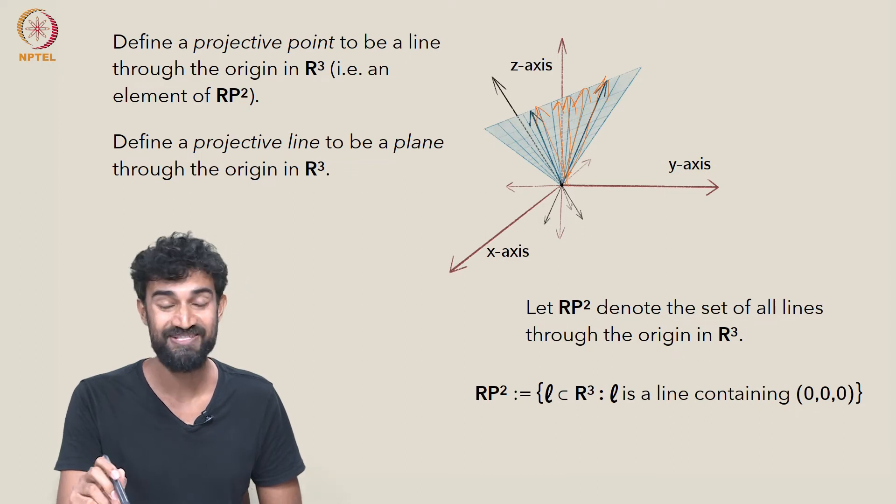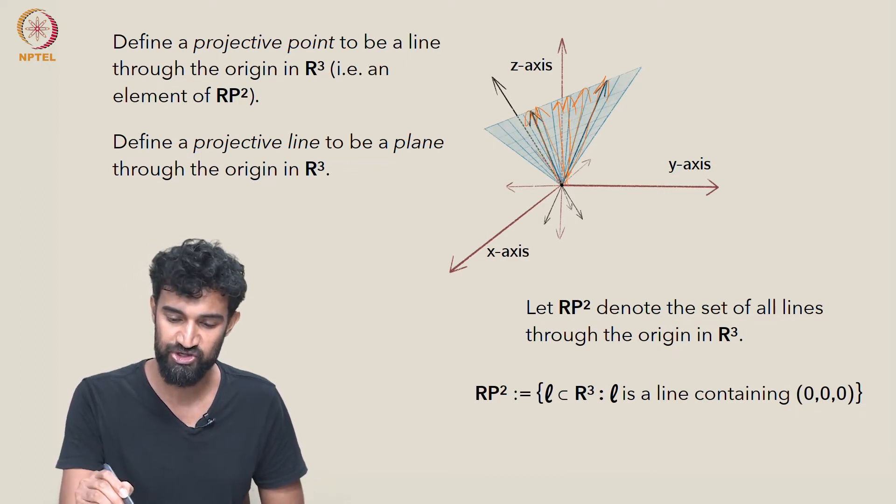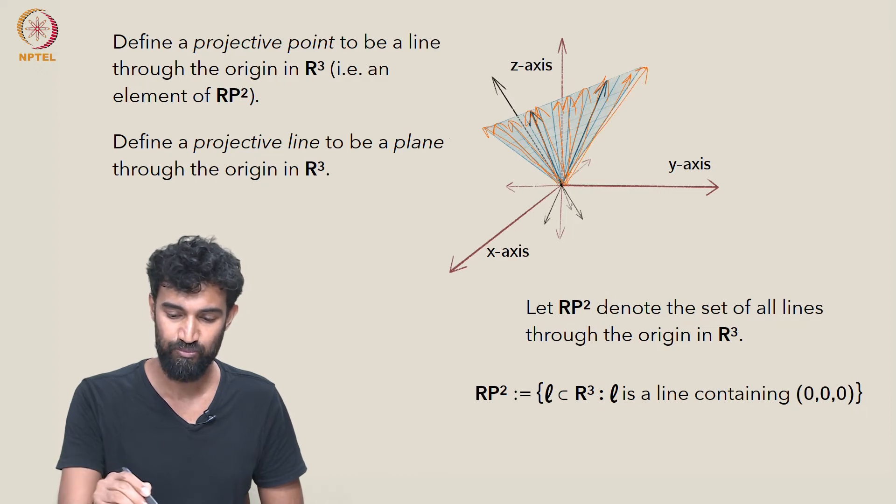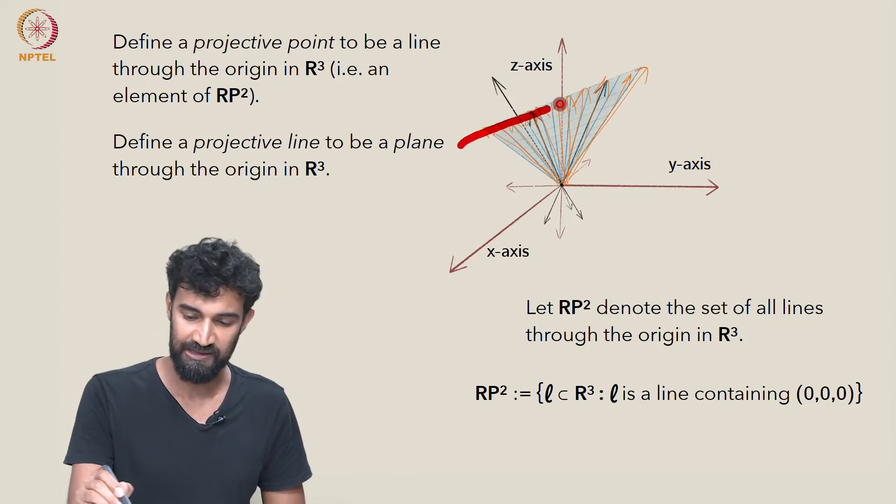Sorry, it consists of a bunch of projective points. Each of these lines through the origin that I'm drawing is a projective point, and there's a whole line's worth of them in this projective line here.